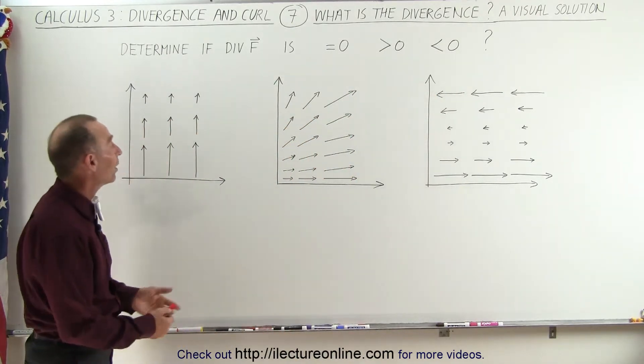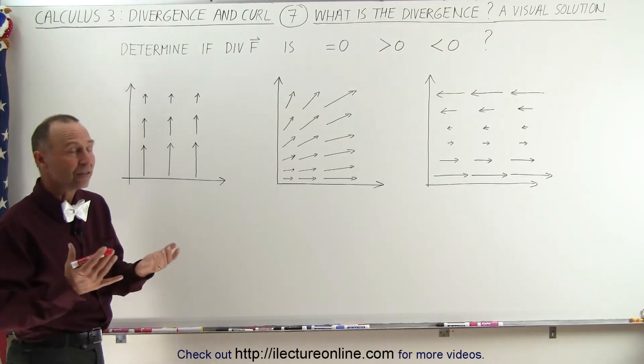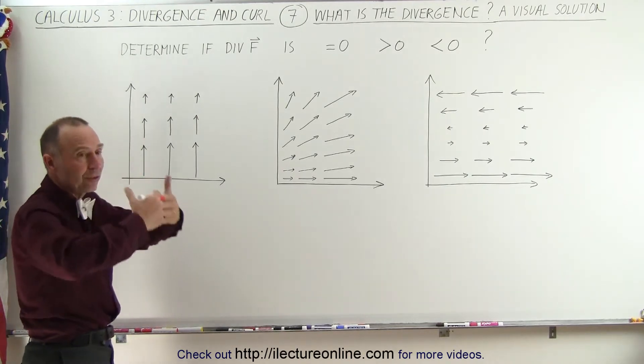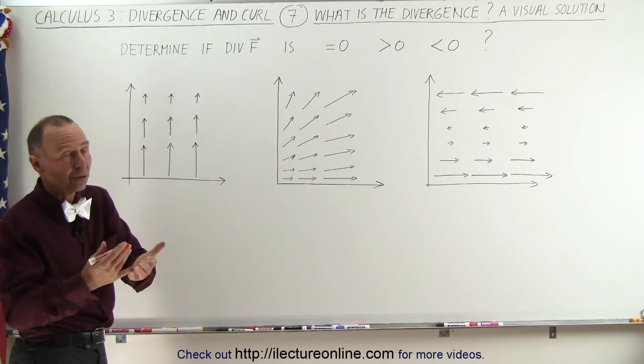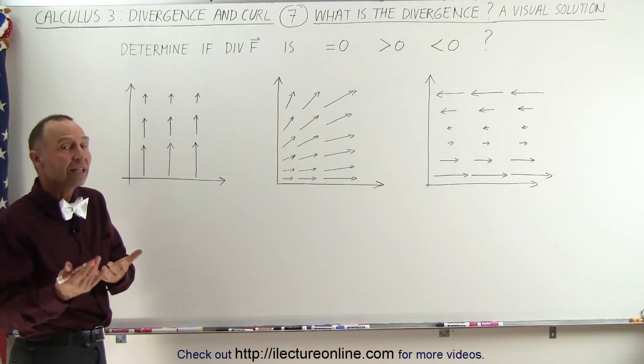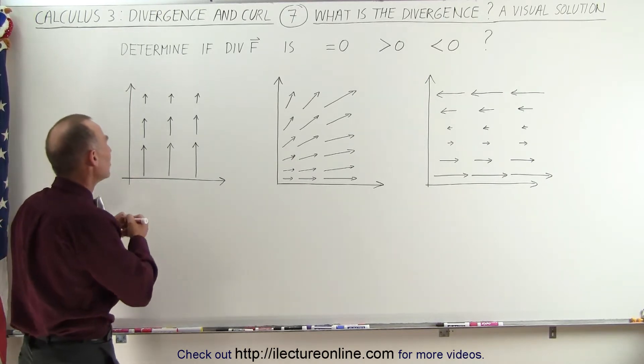So how do we know? Well, one of the ways we can do that is by drawing boxes to see if more flux goes in as comes out, or less flux goes in, or the same amount goes in as comes out. So let's go ahead and do that.